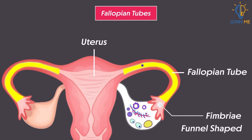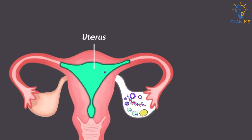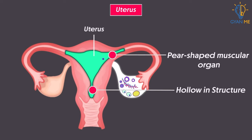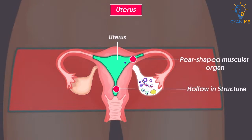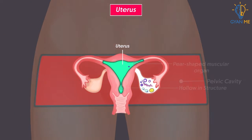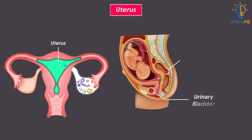From the fallopian tube, the matured ova or egg enters the uterus. Uterus is a pear-shaped muscular organ. It is hollow in structure and present in the pelvic cavity of females. It lies between the urinary bladder and rectum.